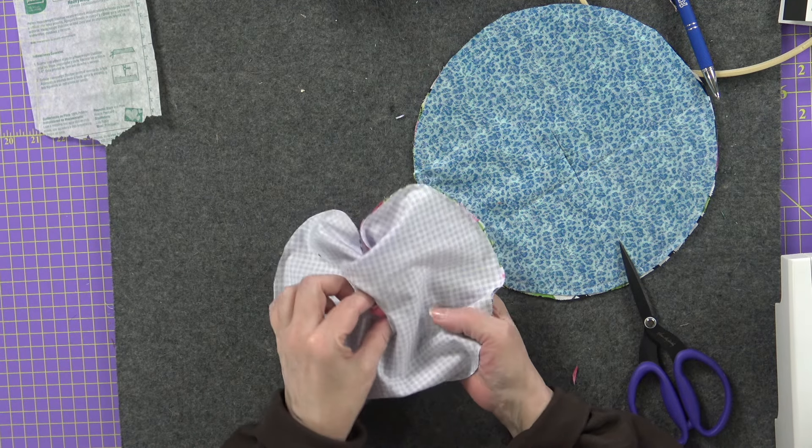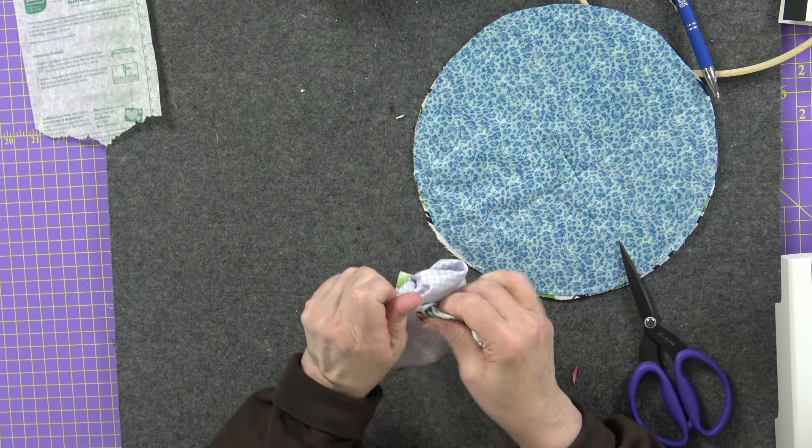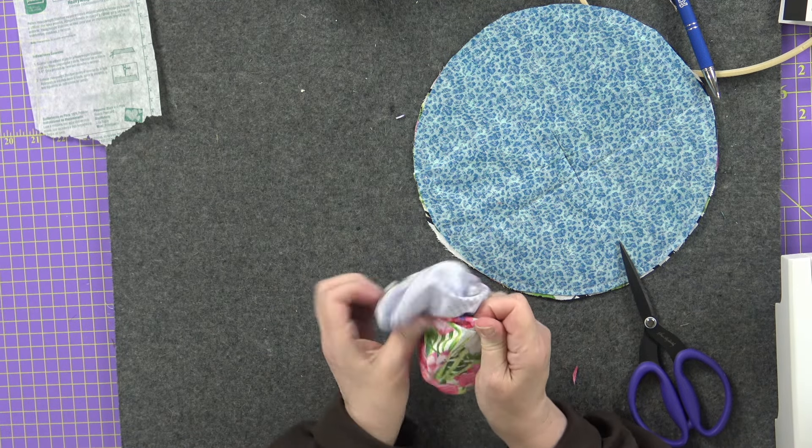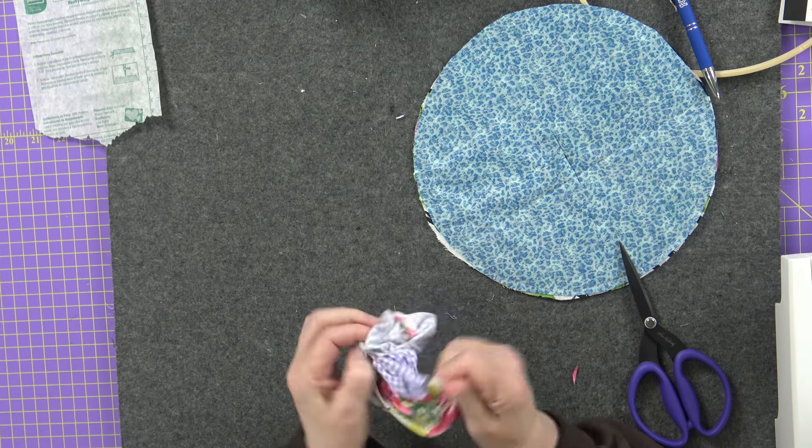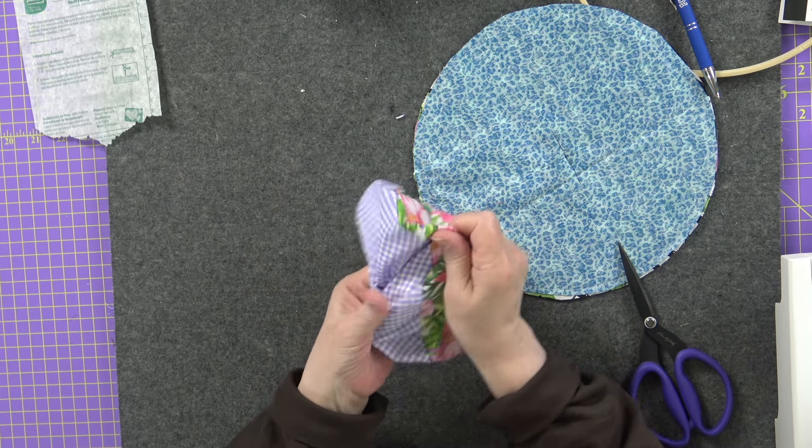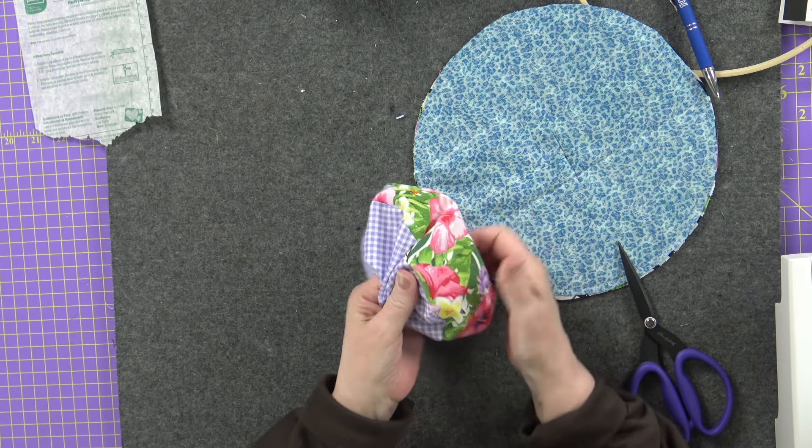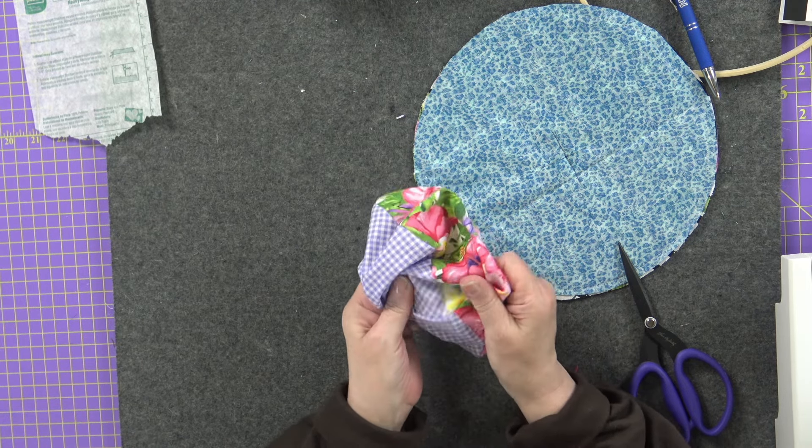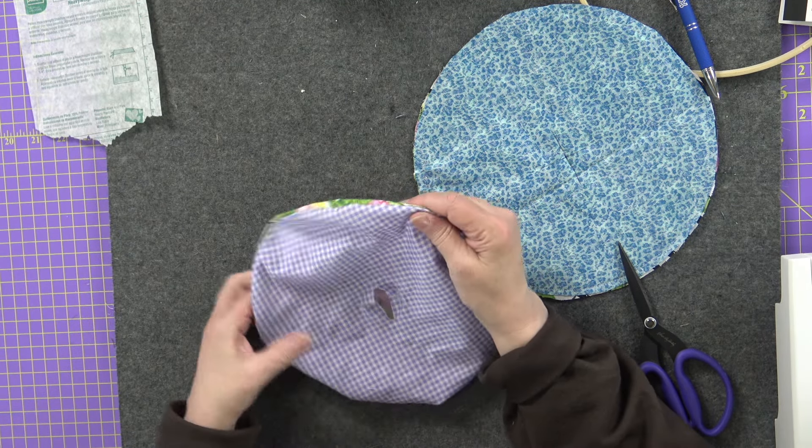Now you're going to take the right side from that other circle that's whole and pop it through. And then finger press right at the seam line. So it looks all nice. And we will give it a press.